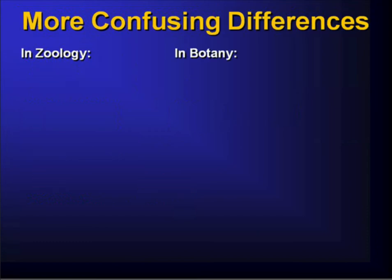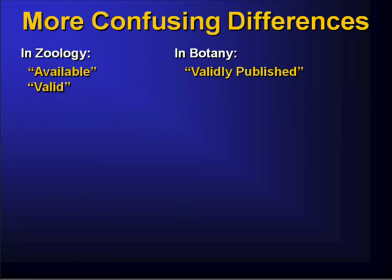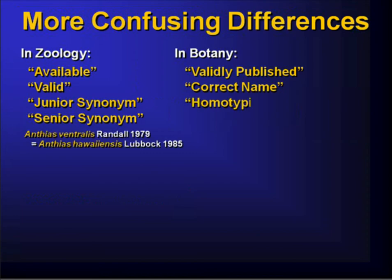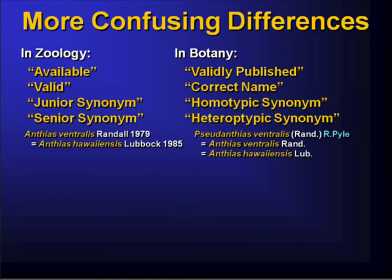There are also confusing terminology differences between the two codes. In zoology, a name is called available if the code says it was created properly and can be used. The equivalent term in botany is validly published. Unfortunately, the word valid in zoology means something subjective — whether a taxonomist considers organisms to be one species or two — whereas a botanist would use the term correct name for that concept. Similarly, zoologists use the terms junior synonym and senior synonym, while botanists use homotypic synonym and heterotypic synonym.